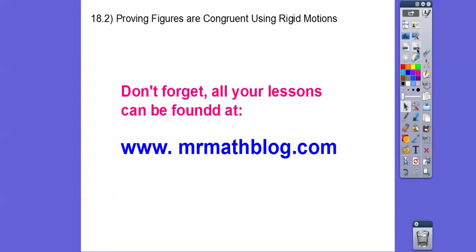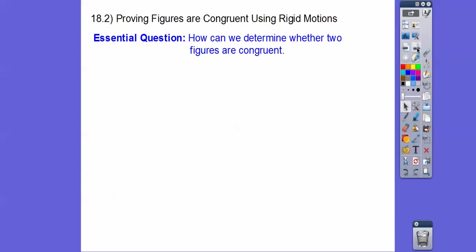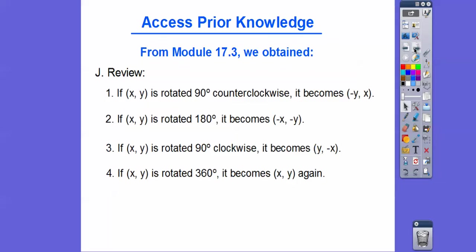So let's get to our essential question here. How can we determine whether two figures are congruent? Well, if they have a rigid motion, they're congruent. And these are all rigid motions.